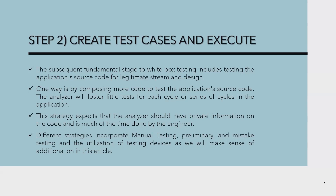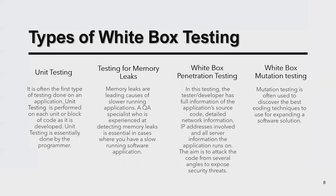The types of white box testing include: first, unit testing — we verify each and every unit of the code, a block, its structure, functions, and arguments. All this data is verified inside the program. Second is testing for memory leaks — memory leaks are a leading cause of slower-running applications, and as a QA specialist, detecting memory leaks is essential.